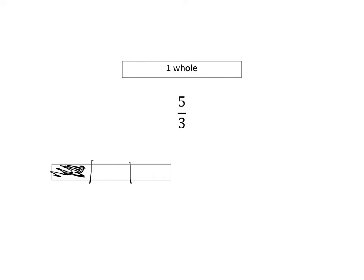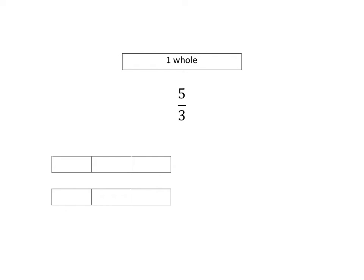So now we don't only want 1 third, we want 5 thirds. So we're going to need 1, 2, 3, 4, 5 of them. Well to get 5 we're going to have to put in another whole, like this. So then we can have 1, 2, 3, 4, 5 thirds. Let's colour that in, and it'll look like this.